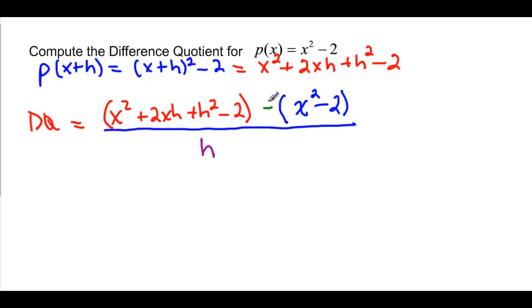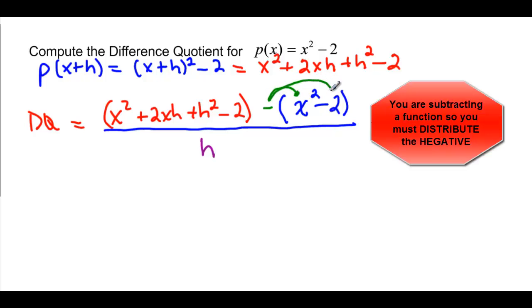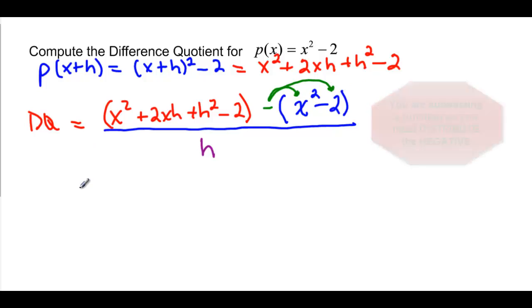There's three different pieces here. Remember, this is the part that everybody forgets. You have to distribute the negative. I can't say that enough times. So let's compute. x squared plus 2xh, plus h squared, minus 2. Then when I distribute, it becomes minus x squared and plus 2, all over h.